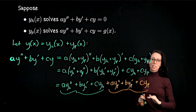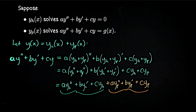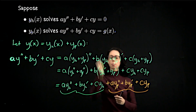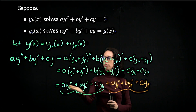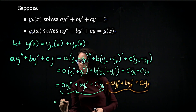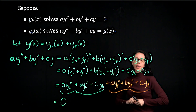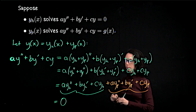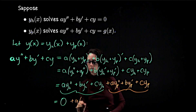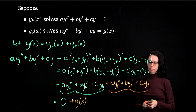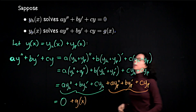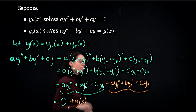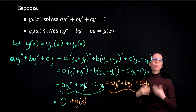The homogeneous solution solves the homogeneous problem, so when we plug it into the left-hand side it equals zero. The particular solution solves the non-homogeneous problem, so when we plug it into the left-hand side we get g of x. So the sum equals zero plus g of x, which equals g of x. This confirms that y — the sum of the two — satisfies a y double prime plus b y prime plus c y equals g of x, making it a solution to the overall non-homogeneous problem.